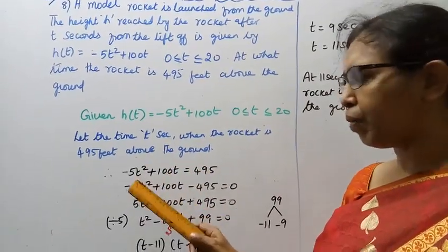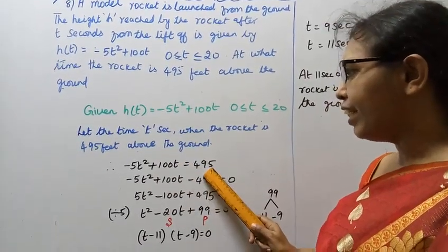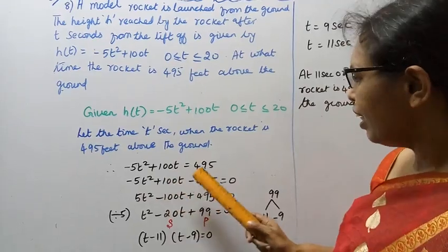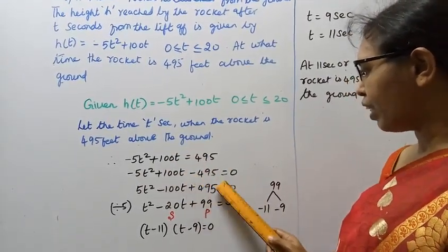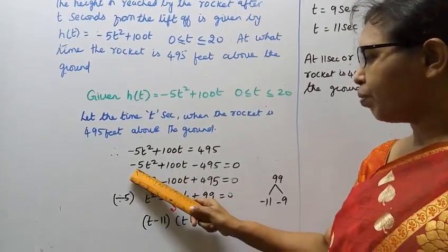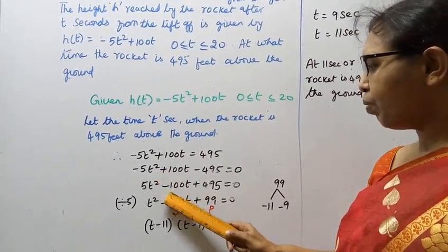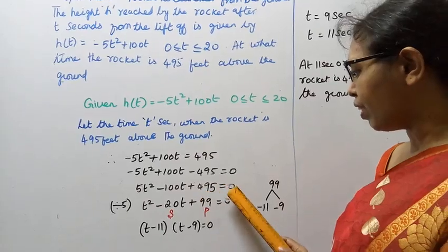So for h(t), we have -5t² + 100t = 495. Moving 495 to the other side gives -5t² + 100t - 495 = 0. When we move this to both sides, we get -5t² + 100t + 495 = 0.